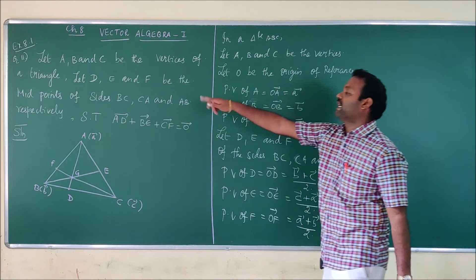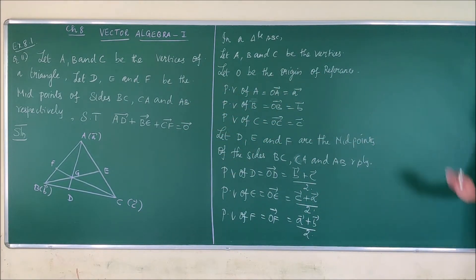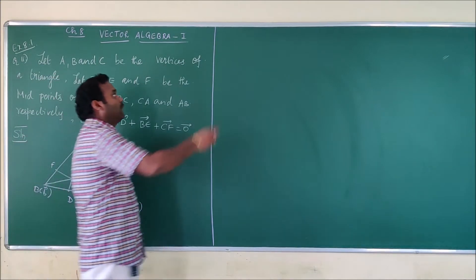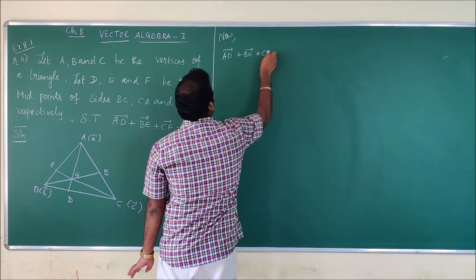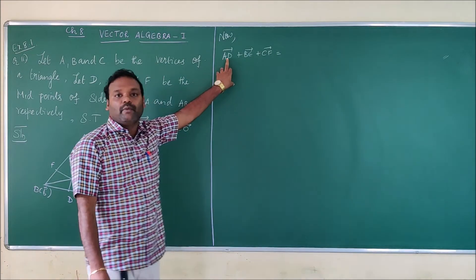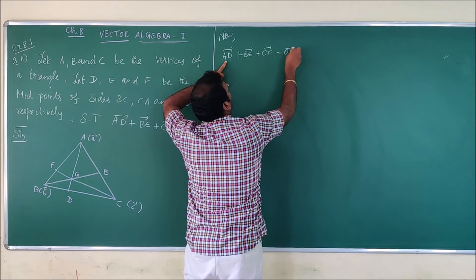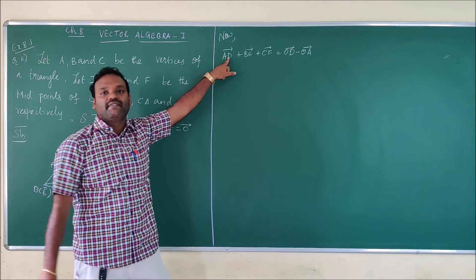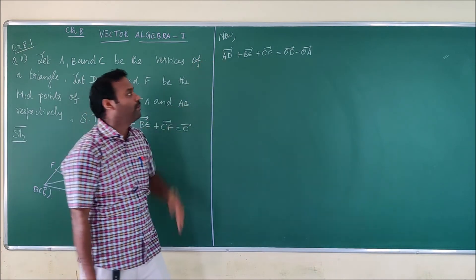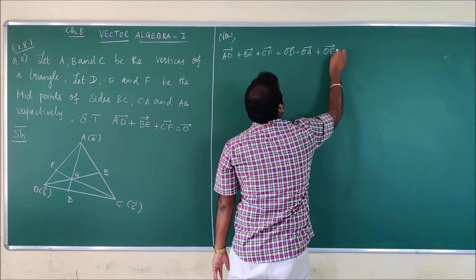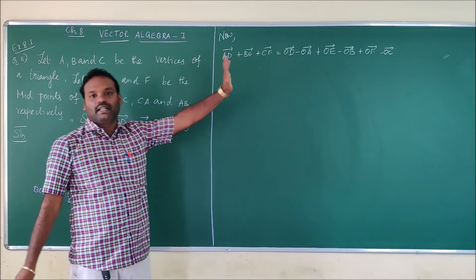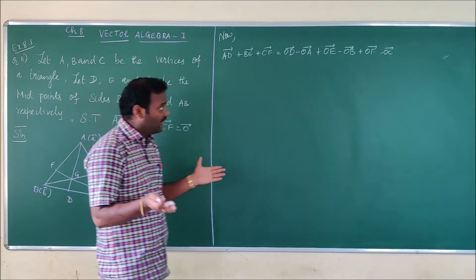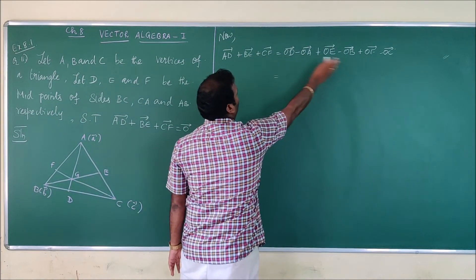Now I am going to take the left-hand side of what we need to prove and expand it using the position vector theorem. The left-hand side is AD vector plus BE vector plus CF vector. By the theorem — position vector of end point minus position vector of initial point — AD vector equals OD vector minus OA vector, BE vector equals OE vector minus OB vector, and CF vector equals OF vector minus OC vector.